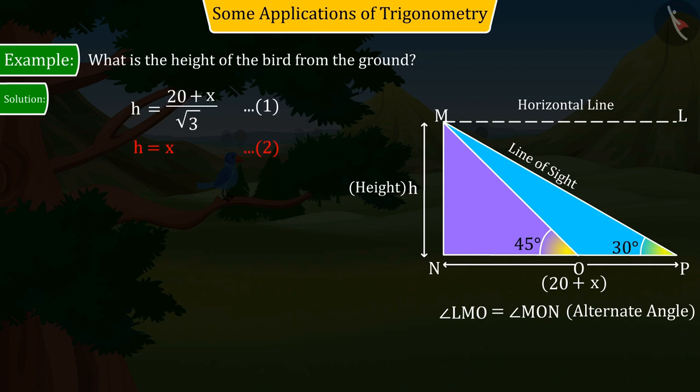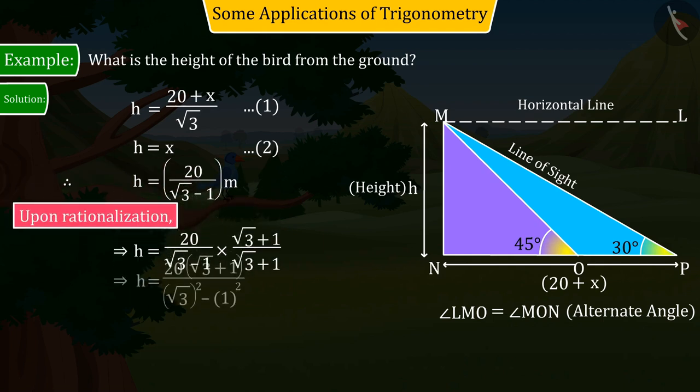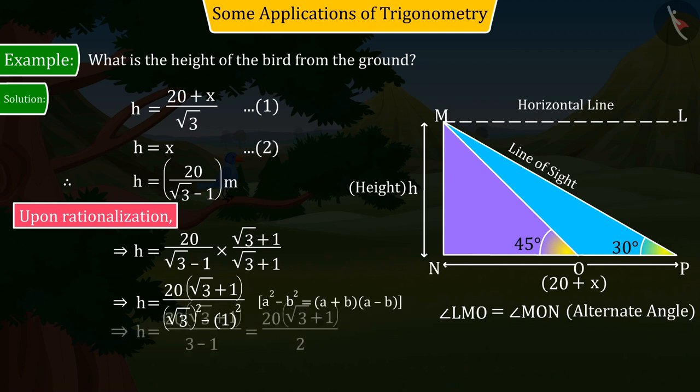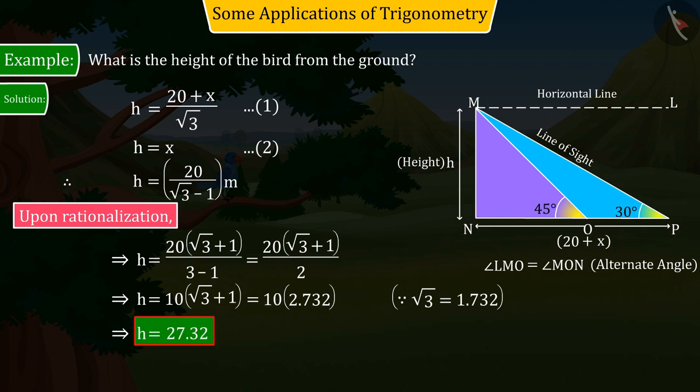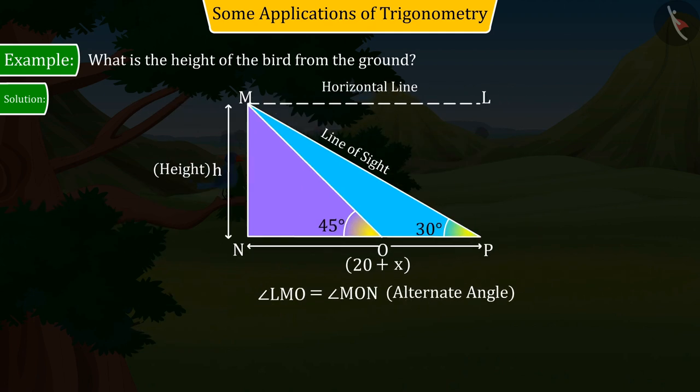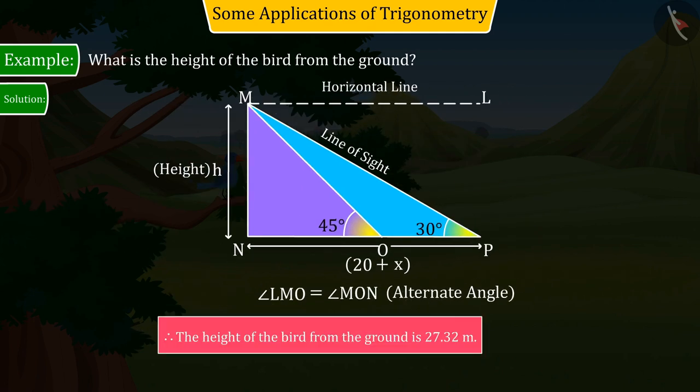Solving the equation by comparing 1 and 2, the value of h is obtained as 20 divided by square root 3 minus 1, whose rationalization gives the value of h as 27.32. So, we can say that the height of the bird from the ground is 27.32 meters.